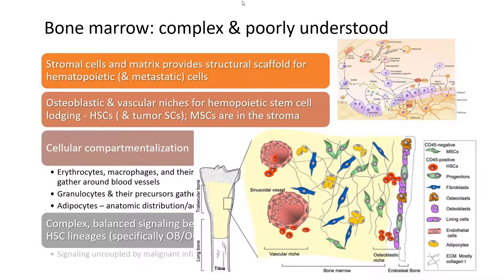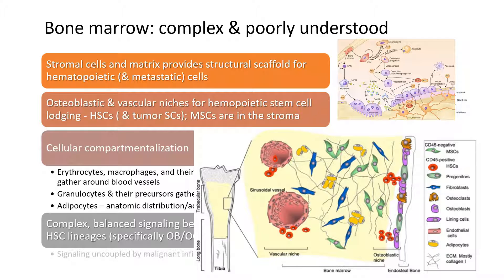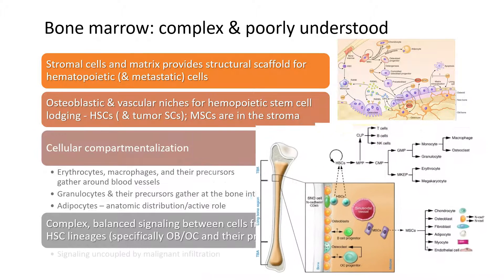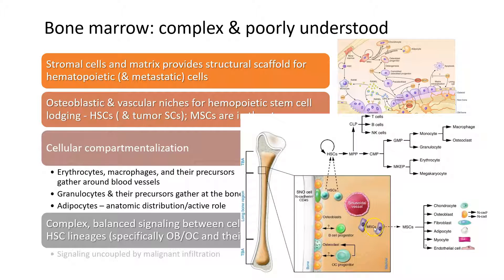The bone marrow is a complex and poorly understood organ with stromal cells and the matrix providing the structural scaffold for the hematopoietic cells. There are hidden spaces — osteoblastic and vascular niches along the endosteal surfaces and around blood vessels — for hematopoietic stem cells. These are also where tumor stem cells reside. Mesenchymal stem cells are more evenly distributed within the bone marrow space, shown here in green, and become osteoblasts, fibroblasts, and fat cells.